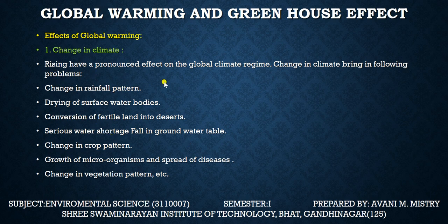The effects of global warming include a change in climate. Rising greenhouse gas concentrations have a pronounced effect on the global climate regime, bringing in the following problems: change in rainfall pattern, drying of surface water bodies, and the conversion of fertile land into desert — meaning land where agricultural activities can be done will convert into desert.